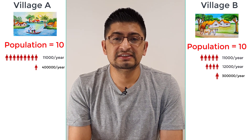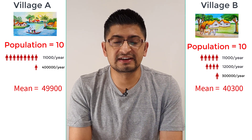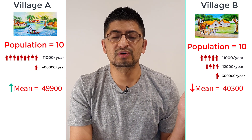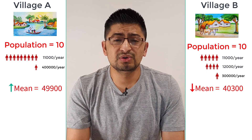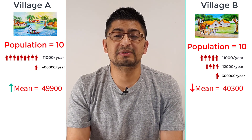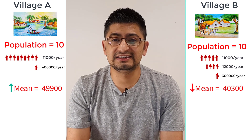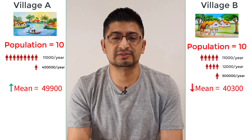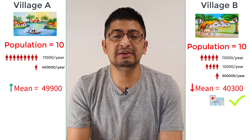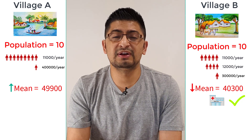Based on the values provided, the mean of Village A is $49,900 whereas the mean of Village B is $40,300. Since the mean of Village B is lower, the economic status of Village B is lower than Village A. So if you go with the mean, you would make the free hospital in Village B because Village B appears poorer.